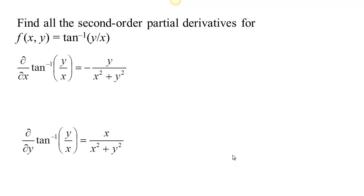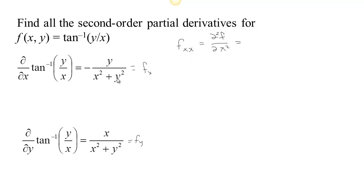Let's compute some second-order partial derivatives of f(x, y) = arctan(y/x). We already know f sub x is negative y over x squared plus y squared, and f sub y is x over x squared plus y squared. For f sub xx, using the quotient rule: the derivative of the top is 0 times the bottom, minus the top — so plus y — times the derivative of the bottom which is 2x, all over x squared plus y squared squared. That gives 2xy over x squared plus y squared squared.